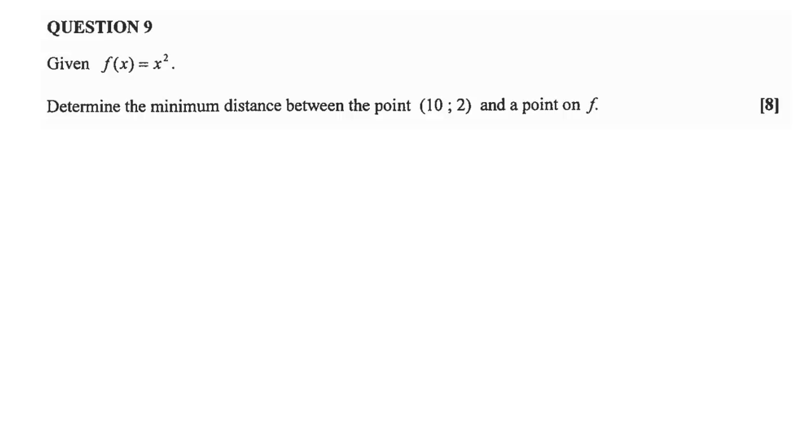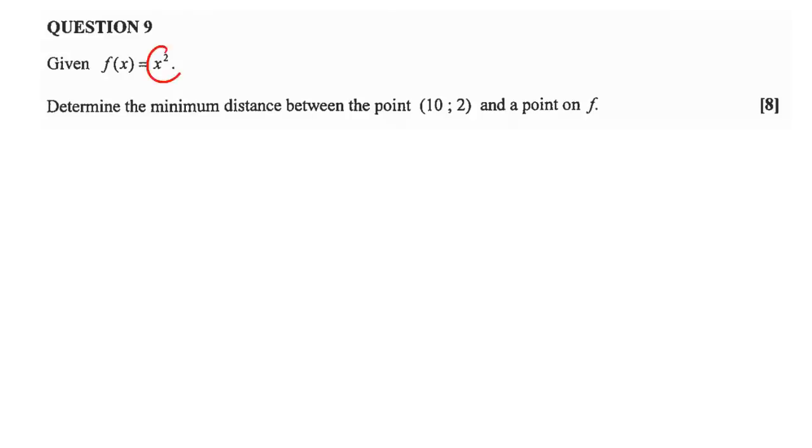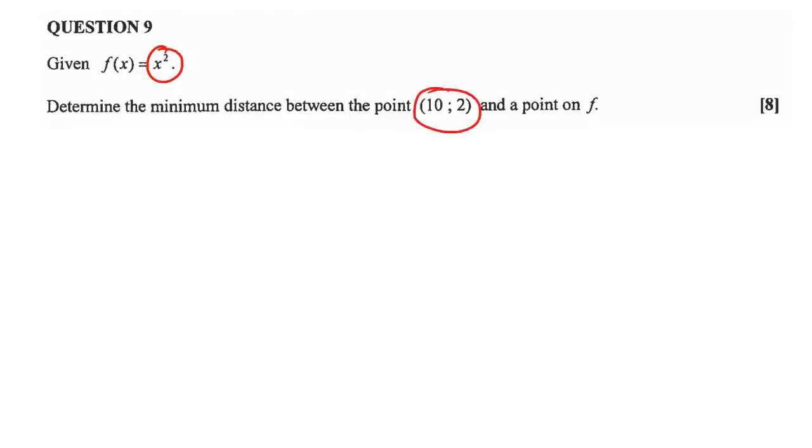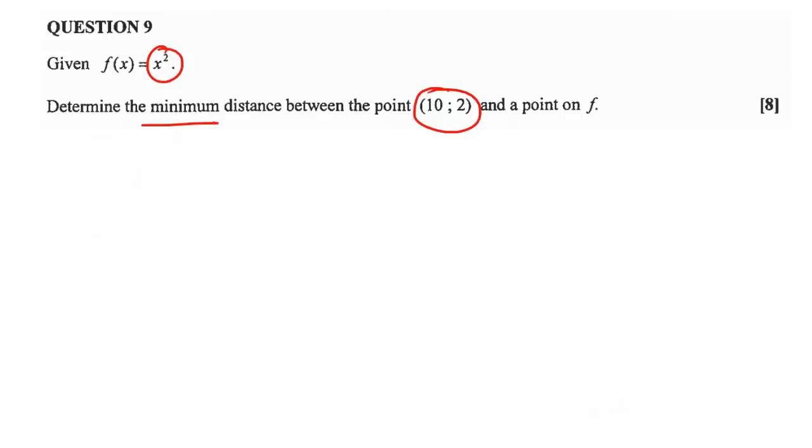What's actually quite interesting is that this question, a similar question was asked in 2017's November paper. Check this out. This is the paper from 2017. We have an equation of y equals x squared plus 2. In this year's paper, they just used x squared. Then they gave us a point 0 and 3. In this one, they give us the point 10 and 2. And then they ask us for the minimum distance. In the question paper in 2017, they say calculate the distance between Benny when the car is closest to Benny. So that's also a minimum question.